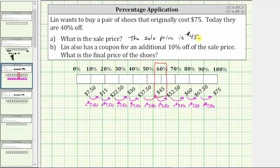Going back to the tape diagram just for a moment, notice how 40% of $75 is $30, which is the amount Lynn saves by buying the shoes at 40% off.